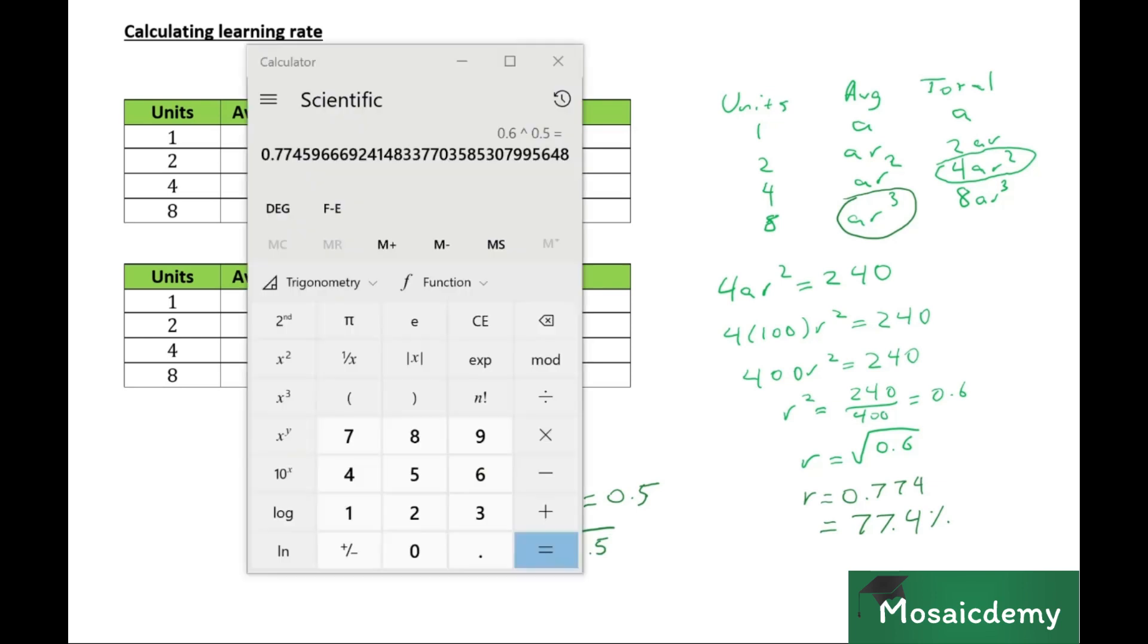If we go back, the cube root of 0.5, so 0.5 to the power of 1 by 3, gives us 79.37%.